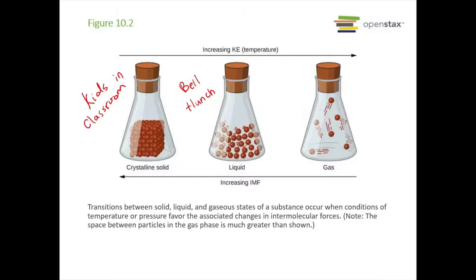They're talking, walking together, maybe going to play some games — still somewhat close. And then school ends. Maybe they have a lollipop or something and we give them sugar. What happens when kids eat sugar? They get crazy — they become gas particles and start running all over the place, maybe not even interacting with each other, playing hide and seek or tag. They can't even find each other. They're just going nuts.